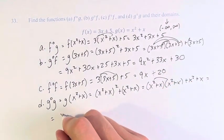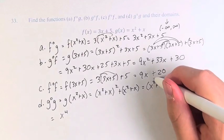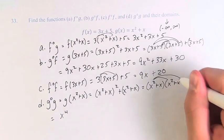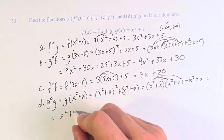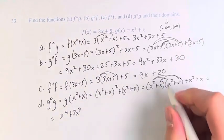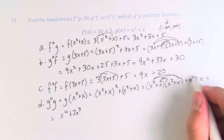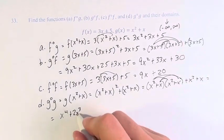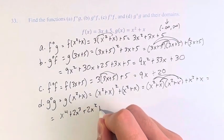x squared times x squared is x to the fourth. x squared times x is x cubed, plus another x cubed is plus two x cubed, plus x squared. However, we have another plus x squared here, so that's plus two x squared, plus x.